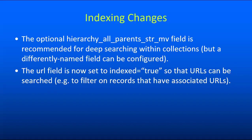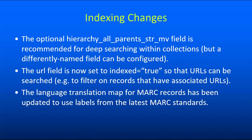More significant to the majority of users is the fact that we've made the URL field indexed in Solr, whereas previously it was only stored. This means you can now search for URLs in a way that you couldn't before — for example, do a filter of URL colon star to bring back only records that have URLs associated with them. Finally, we've updated the language translation map for MARC records so that the labels match the latest MARC standards, as what we had in the past was a little bit out of date.